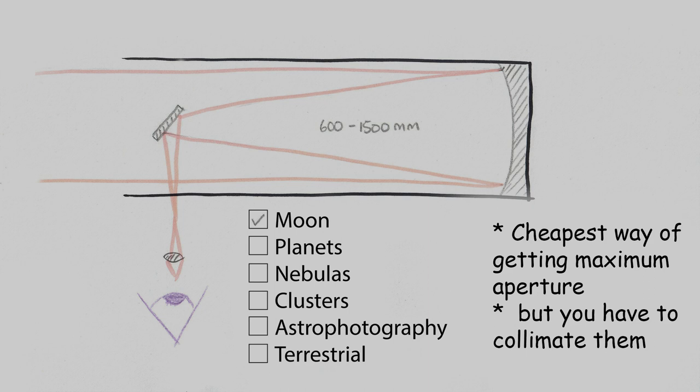They're good for the Moon. The biggest ones can be okay for planets. Ones with short focal lengths are good for small or medium nebulas, and they're good for star clusters and fields and for astrophotography, but only if you have a coma corrector. But they're too awkward to be useful for terrestrial viewing.